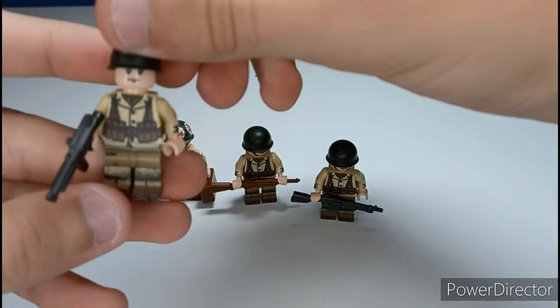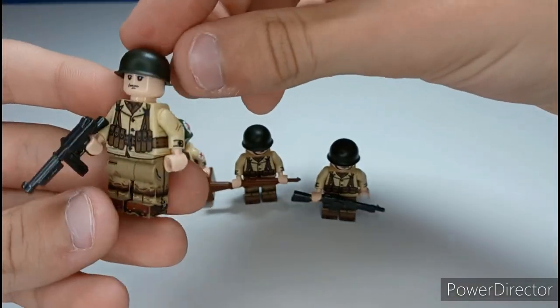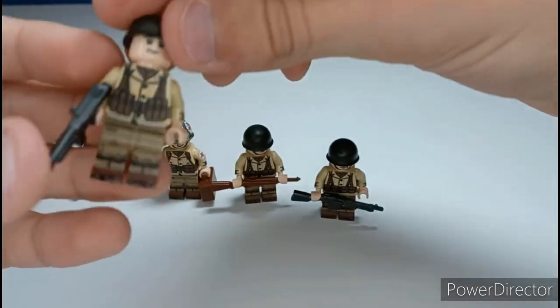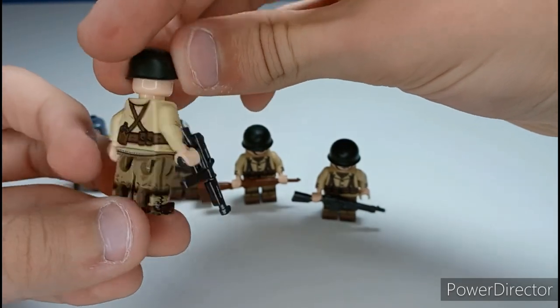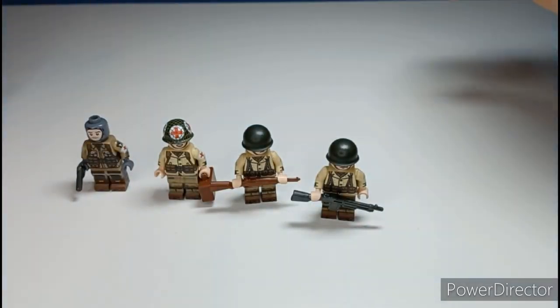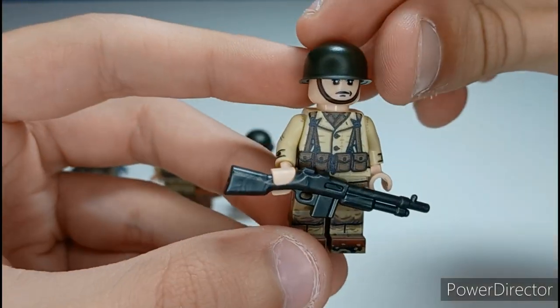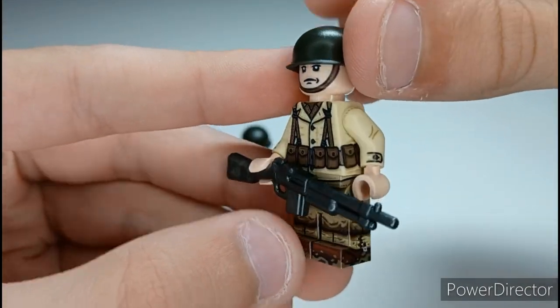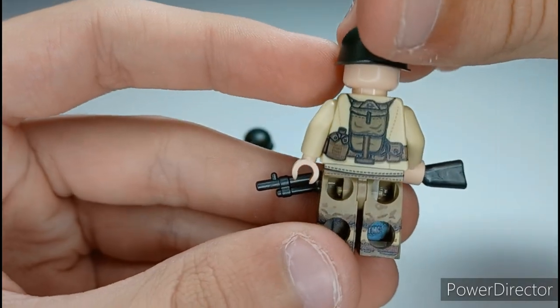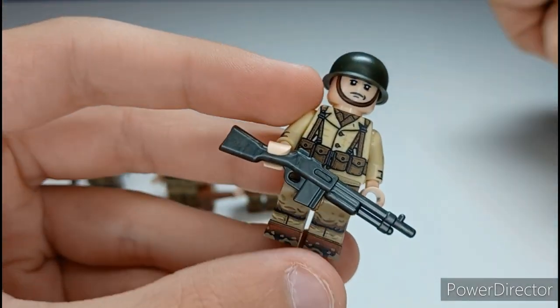All righty, here's the finished figures. Starting off with the Thompson, this is the figure I made. I used the head that I got and this body which is really nice. Then to the BAR, really nice figure, got the same back as the M1 Garand.